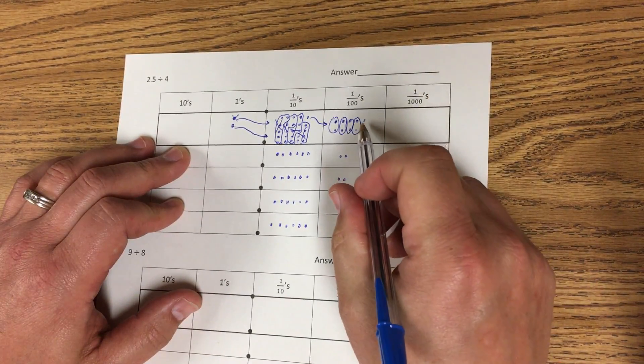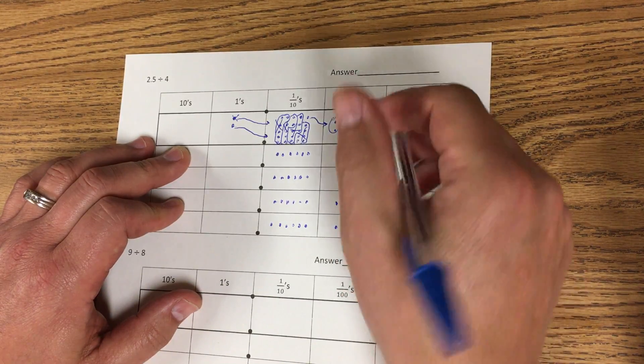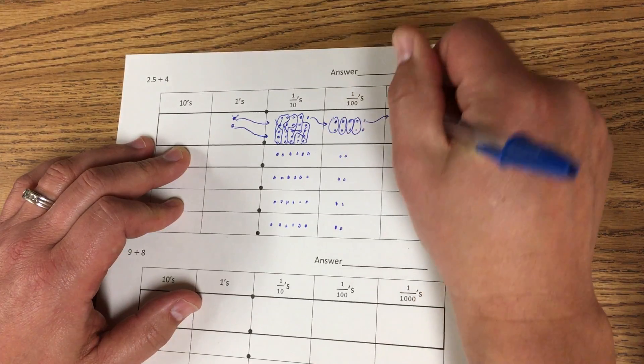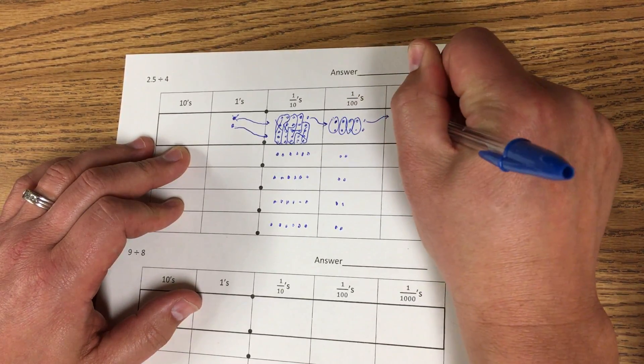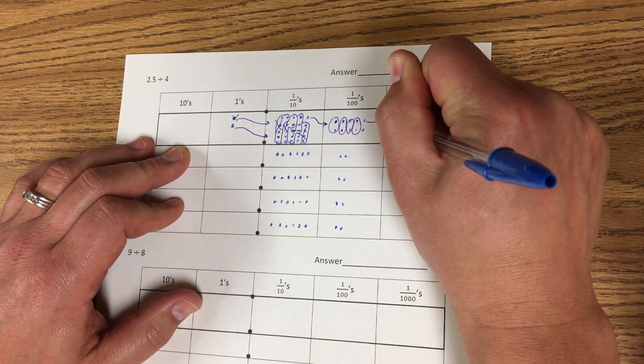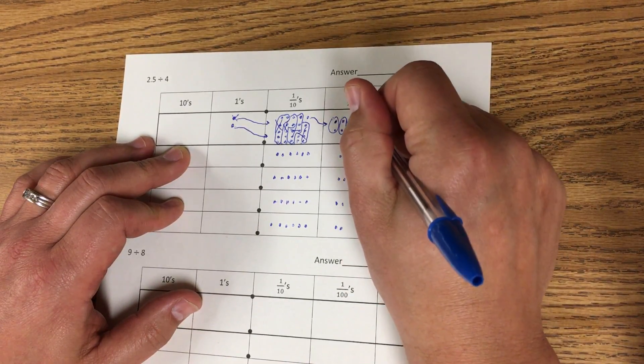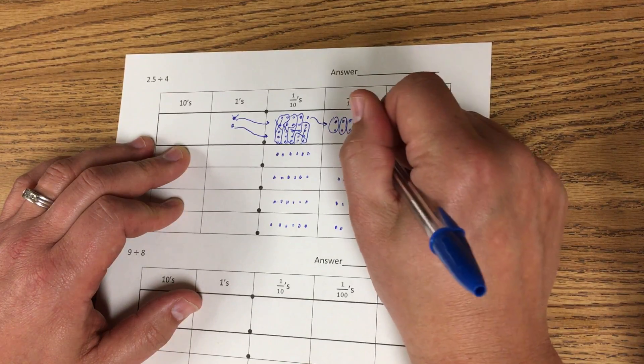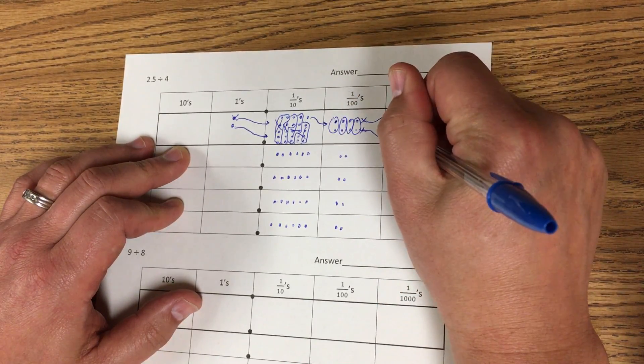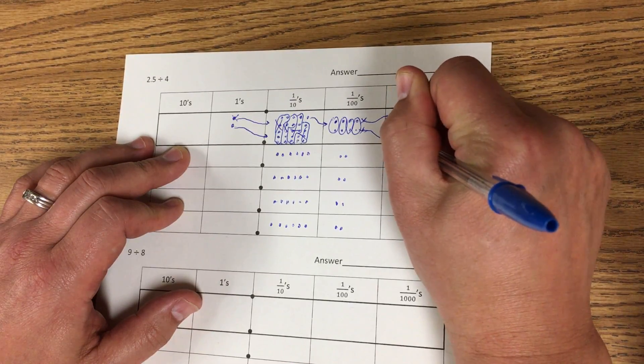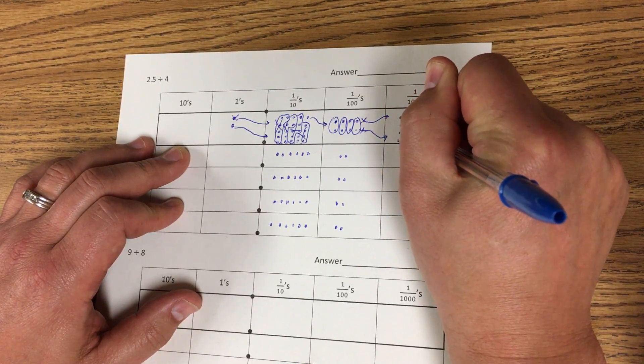So those are going to further be split up into thousandths. So I'm gonna take 1 hundredth and turn it into 10 thousandths. 1, 2, 3, 4, 5, 6, 7, 8, 9, 10. And then I'll take this other one and make 10 more. 1, 2, 3, 4, 5.